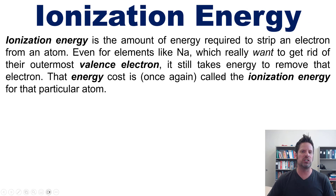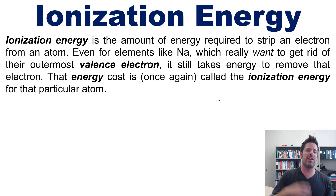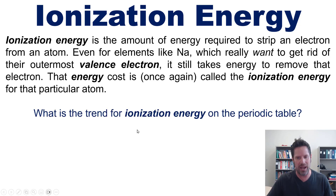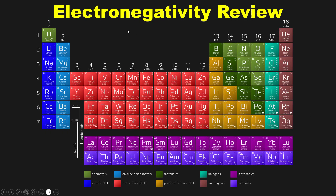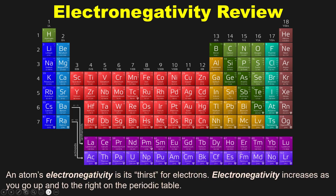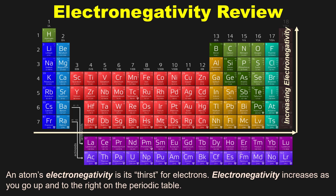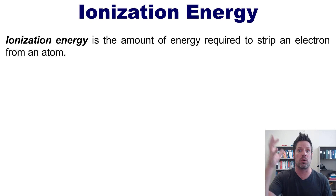Now, onward to ionization energy. Ionization energy is the amount of energy required to strip an electron from an atom. Even for elements like sodium, which really want to get rid of their outermost valence electron, it still takes energy to remove that electron. To understand the periodic trend, let's review electronegativity: generally, electronegativity increases as you go up and to the right on the periodic table, excluding noble gases — so fluorine is most electronegative and francium is least.